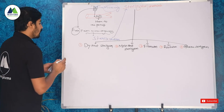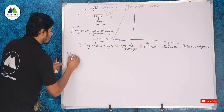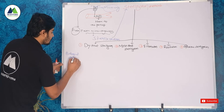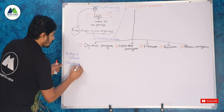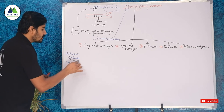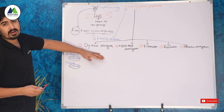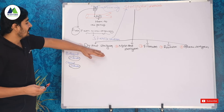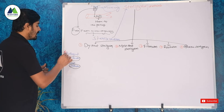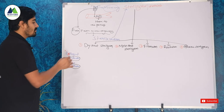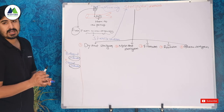From this, what we can expect in the examination — what kind of questions they will ask. For dry heat sterilization, what biological indicator and chemical indicator are used? Similarly for moist heat sterilization, filtration, radiation, and gaseous sterilization.